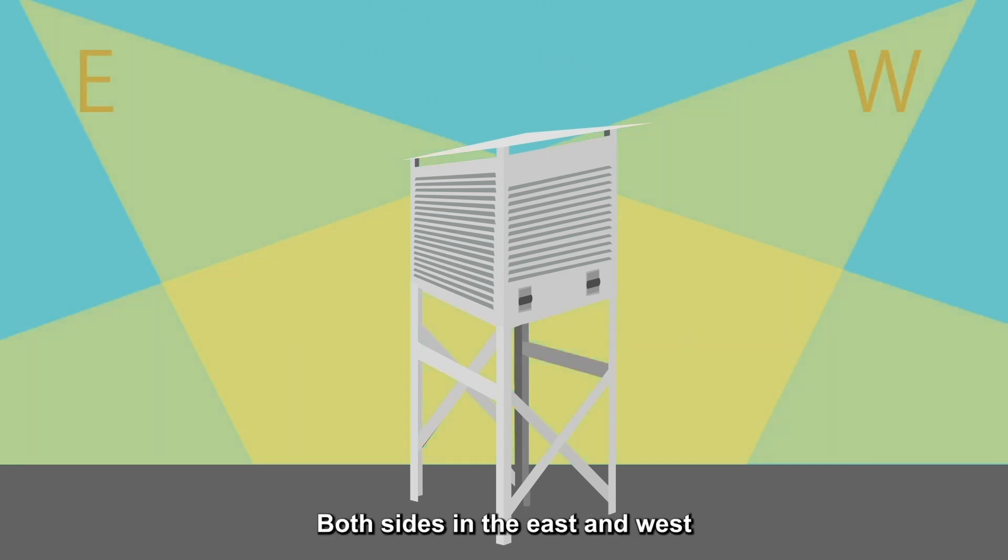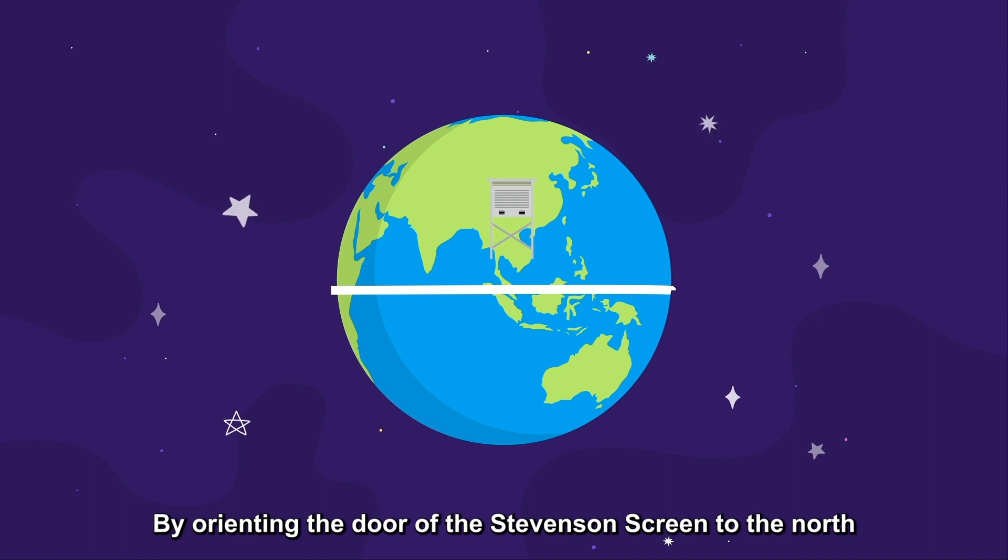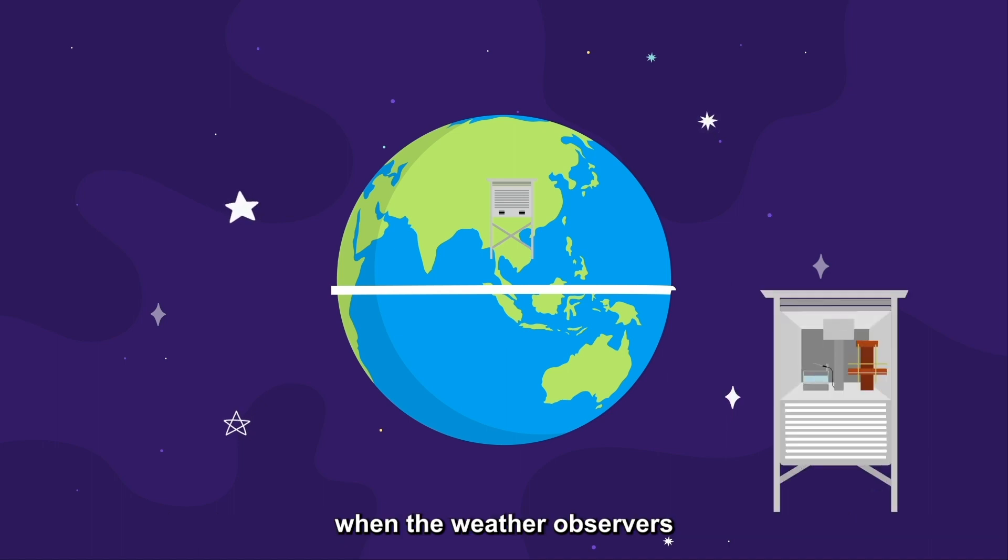Both sides in the east and west are easier to be shined on by the sun. Also, Hong Kong is in the northern hemisphere. By orienting the door of the Stevenson screen to the north, when weather observers open the Stevenson screen to check the instruments, the chance of direct exposure of thermometers to the sun can be greatly reduced. So the doors of the Stevenson screens in the northern hemisphere will be placed facing north, while those in the southern hemisphere should be facing south.